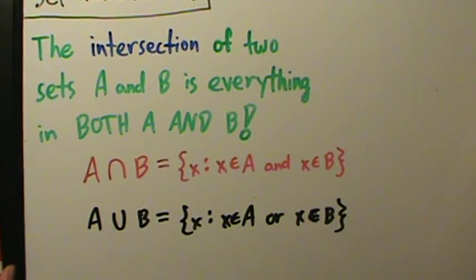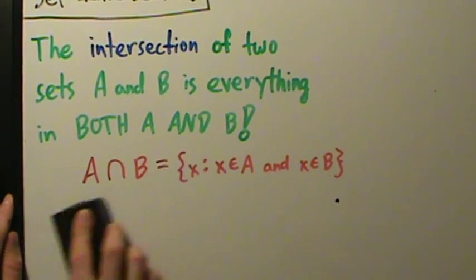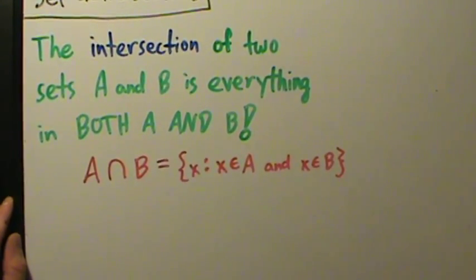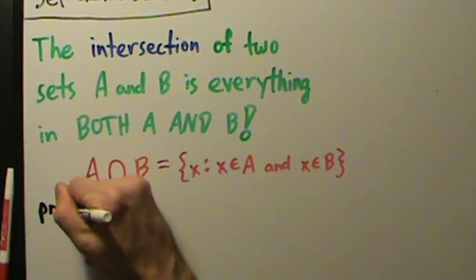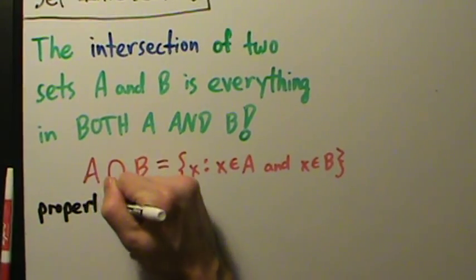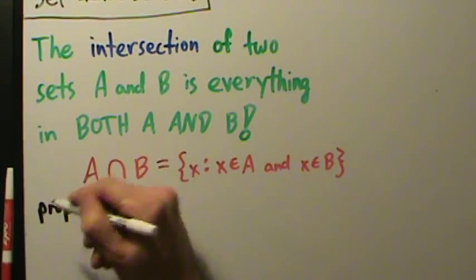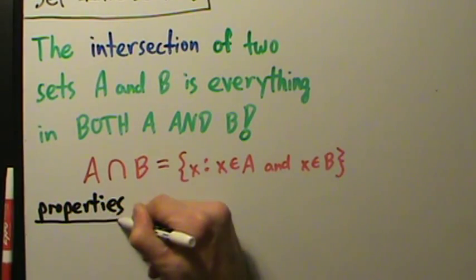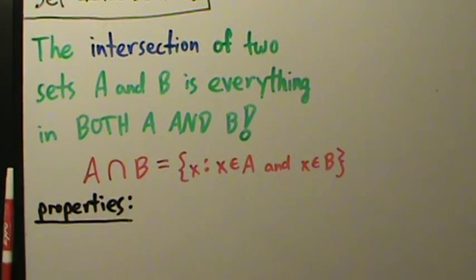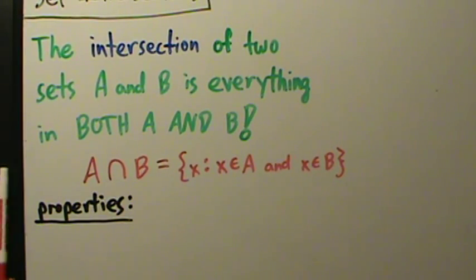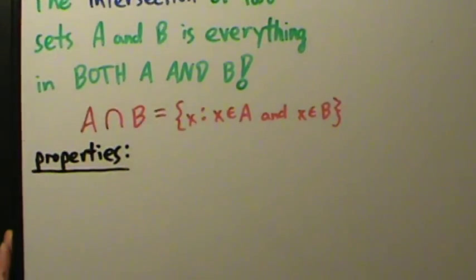Let's erase this and talk about some properties of intersections. We'll talk about some of the properties, do some examples here, then do some more examples in upcoming videos. Since we've already talked about unions, there is a property that relates unions and intersections, so we'll talk about that in this video.